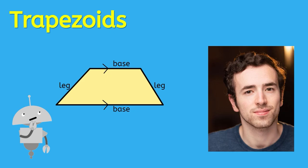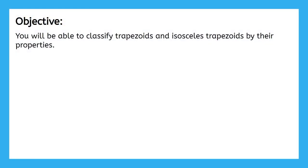Hey everyone, it's Justin again. In this lesson, we're going to be exploring trapezoids. This is a type of quadrilateral that we have not seen yet, and it is not a type of parallelogram. So, it's going to create a whole new category for us. By the end of this lesson, you will be able to classify trapezoids and isosceles trapezoids by their properties.